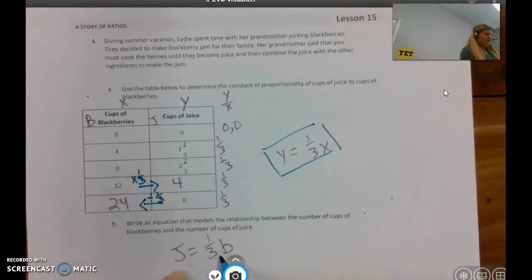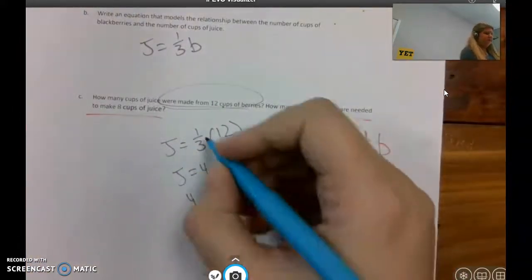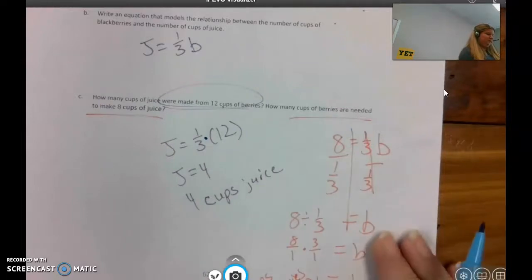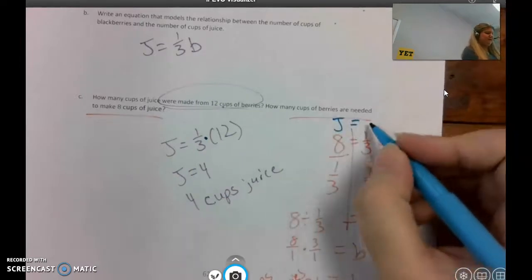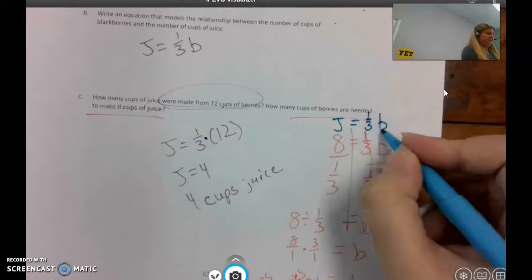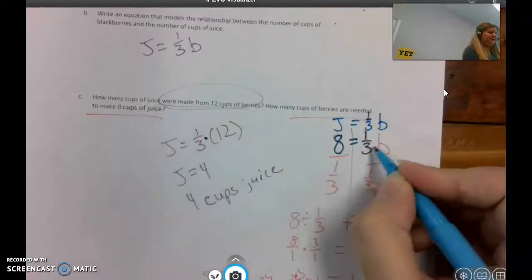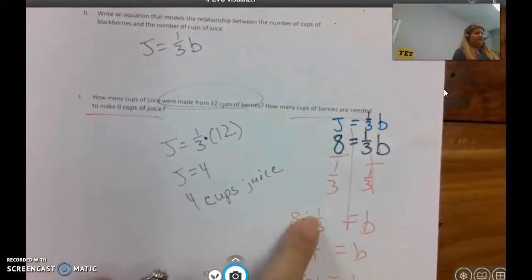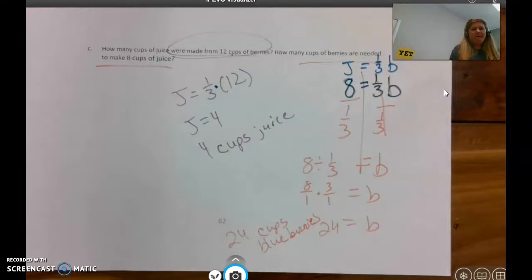And if there were 12 cups of blackberries, so juice equals 1/3 times 12, 1/3 times 12 is 4, 4 cups of juice. And then to make 8 cups of juice, I would replace the juice with 8 and solve this equation after I have replaced j with 8 because they told me that. And I'm dividing each side by 1/3, showing that dividing by 1/3 is times 3/1, and ending with 24 cups of blackberries.